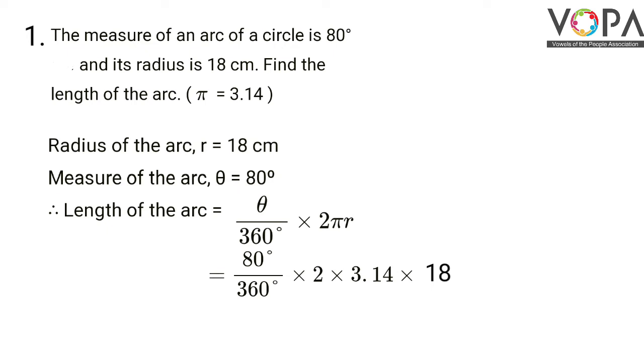Here we can cancel one zero from the numerator and one from the denominator. And 18 twos are 36, so that can also cancel. Then we can also cancel 2 from the numerator and 2 from the denominator.